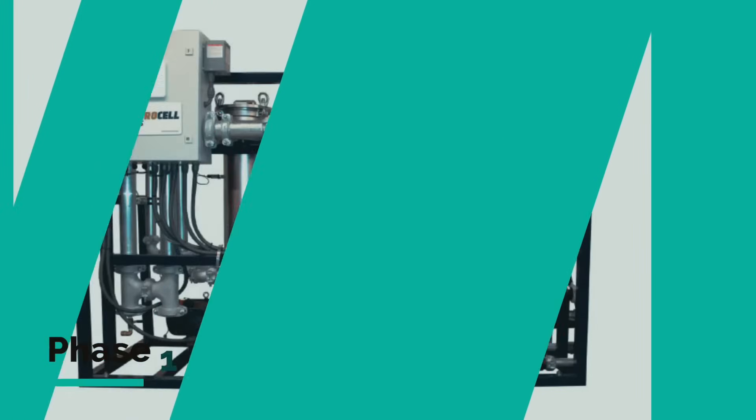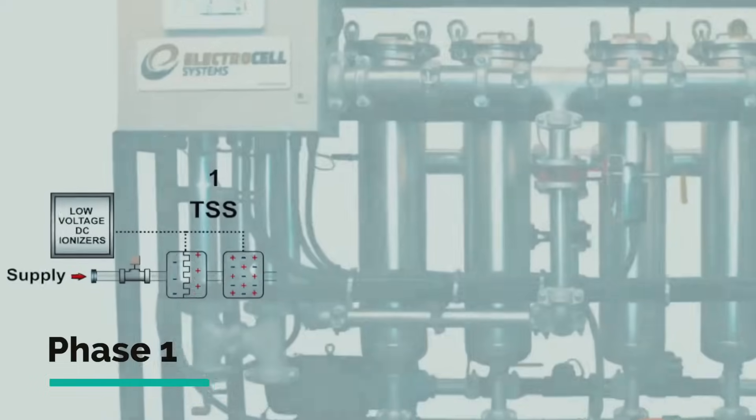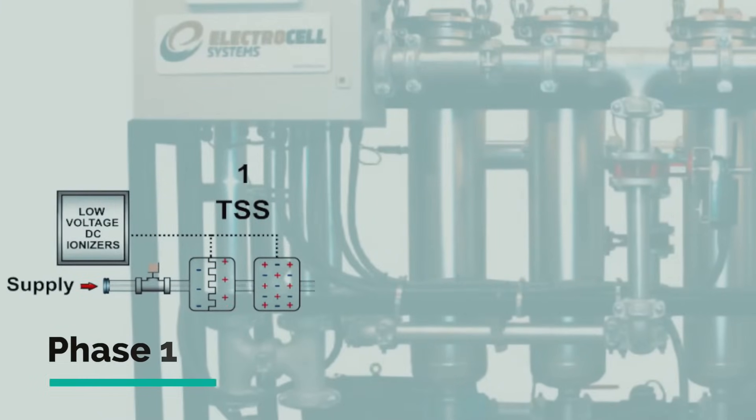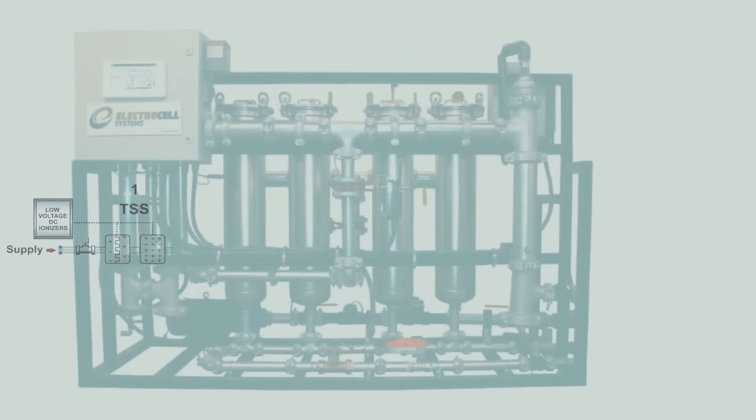Phase 1 of the 3-step treatment process is the application of alternating positive and negative electrical charges to the suspended particles using a low-voltage DC ionizer. This makes the oppositely charged suspended particles attract to each other and, as a result, grow in size and weight.